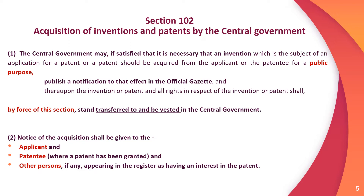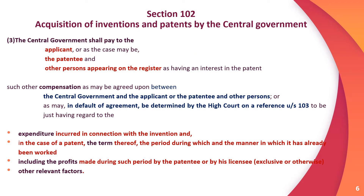Subsection 2: Notice of acquisition shall be given to the applicant, patentee, and any other persons appearing in the register as having an interest in the patent. Subsection 3: The central government shall pay the applicant or patentee and any other interested person in the register such compensation as may be agreed upon between the central government and those parties, or as may in default of agreement be determined by the High Court.